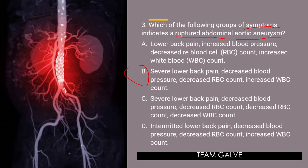Severe lower back pain indicates an aneurysm rupture, secondary to pressure being applied within the abdominal cavity. When rupture occurs, the pain is constant because it can't be alleviated until the aneurysm is repaired. Blood pressure decreases due to loss of blood. After the aneurysm ruptures, the vasculature is interrupted and blood volume is lost, so blood pressure would not increase. For the same reason, the RBC count is decreased, not increased. The WBC count increases as cells migrate to the site of injury. Hence the answer is letter B.